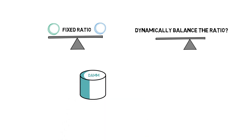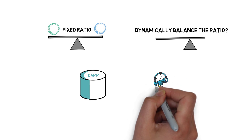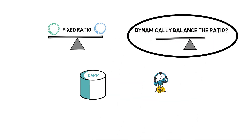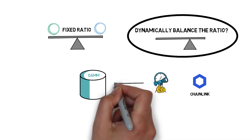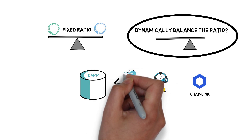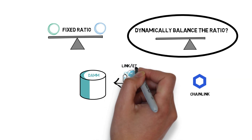DAMMs make use of price oracles to determine if the balance between tokens in the pool should be changed. Price oracles, such as Chainlink, provide external prices to smart contracts in a decentralized and reliable way. They can, for example, provide a current price of LINK/ETH.